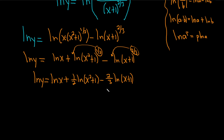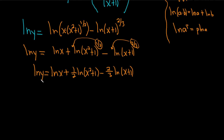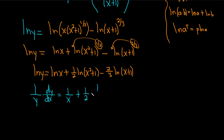Now we take the derivative of both sides with respect to x. On the left-hand side we get 1 over y times dy/dx. On the right, the derivative of ln x is 1 over x, then plus one-half times 1 over x squared plus 1 times the derivative of x squared plus 1 — which is 2x by the power rule. The derivative of y with respect to x is dy/dx because we don't know the function explicitly, whereas here we do. Then minus two-thirds times 1 over x plus 1 times the derivative of the inside, which is 1.